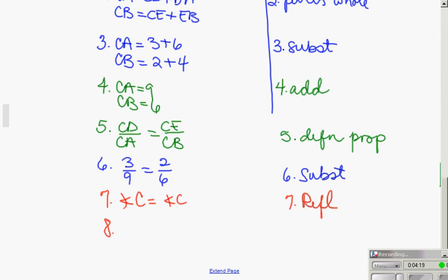And now I can say triangle CDE is similar to triangle CAB by side, angle, side similarity. The whole substitution in showing the segments are proportionate is a little tedious, but not hard. You just have to remember one step per line.